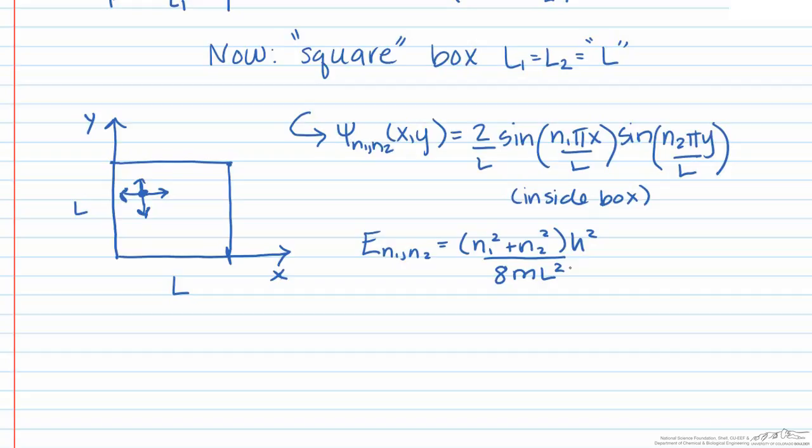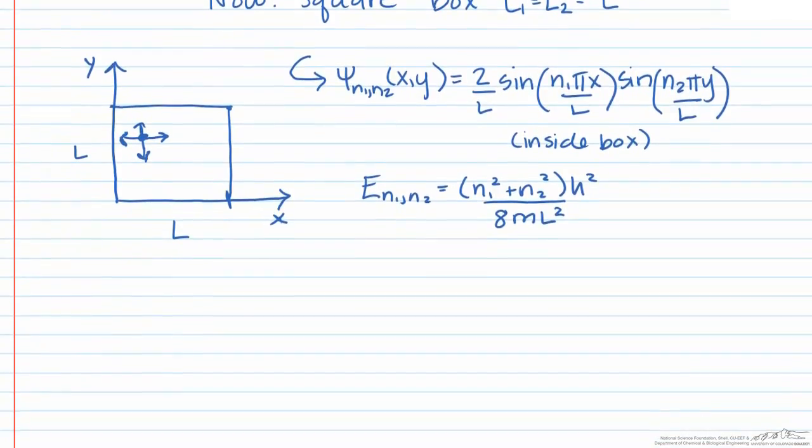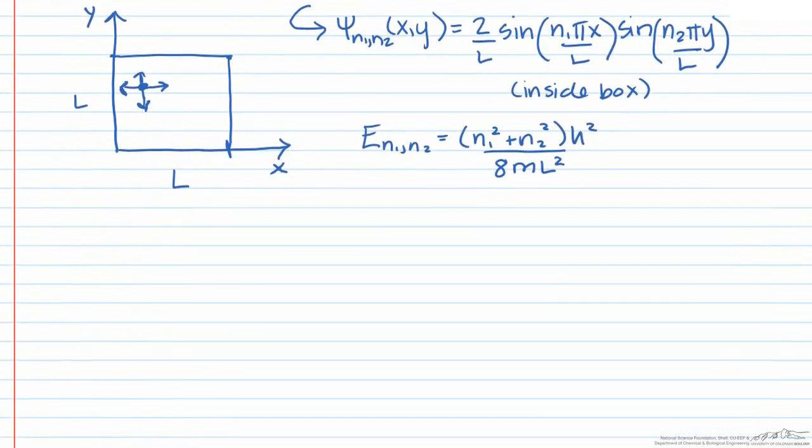By requiring that the box is now a square, we have created a system that has inherent symmetry along the x and y axes. Let's take a look at the first few states and see what consequences arise due to the symmetry.